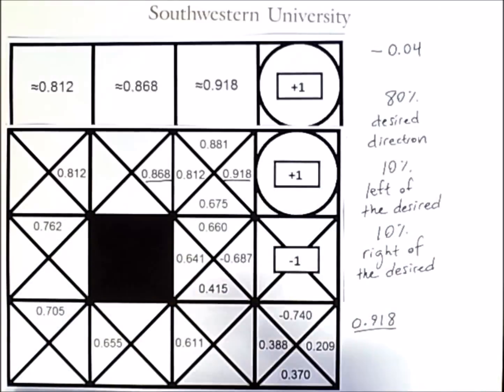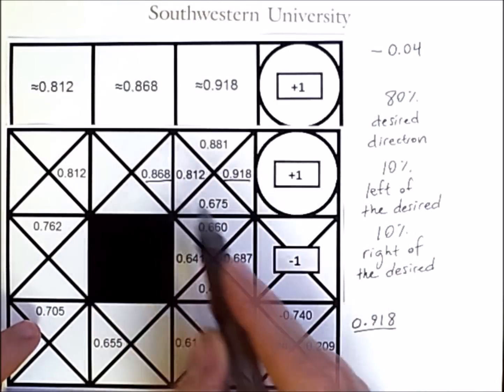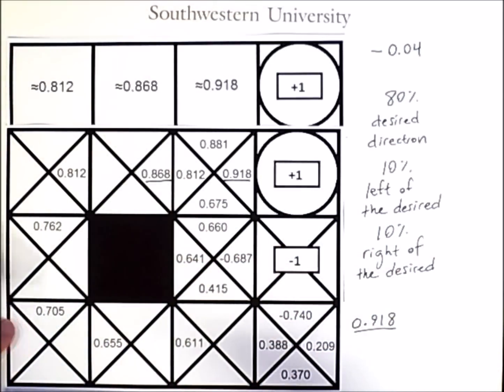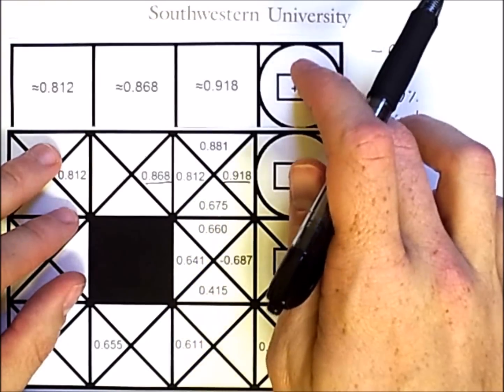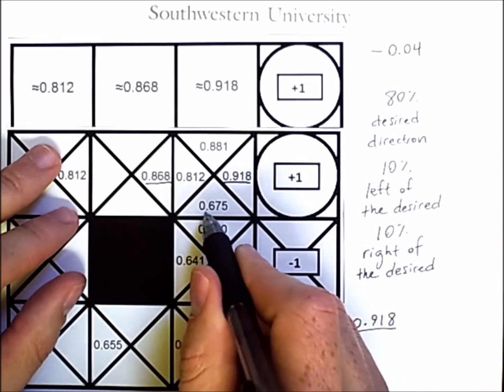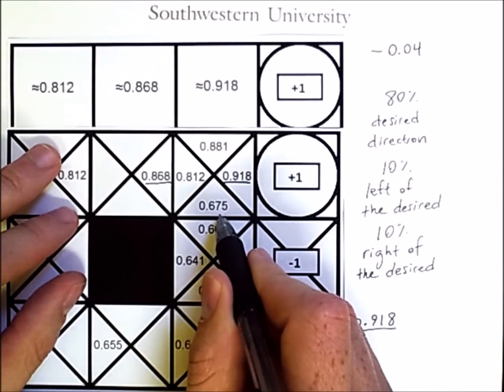Now, I haven't completely filled out this figure, but for the parts that I have filled out, here's justification. What does, for example, this number mean here, 0.675?